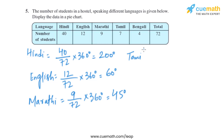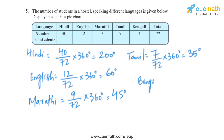For Tamil, there are 7 people out of 72, multiplied by 360 degrees, giving us 35 degrees as the central angle. For Bengali, there are 4 people out of 72, and on solving this we get the central angle of Bengali as 20 degrees.